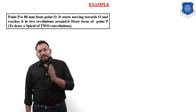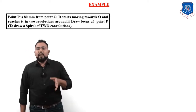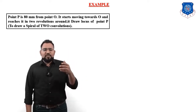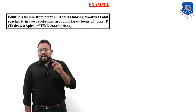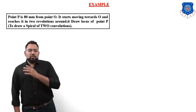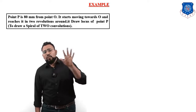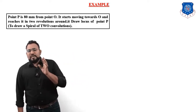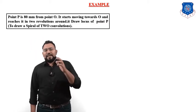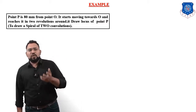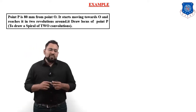Now let us start today's video. The example on your screen states: a point P is 80 mm from point O. It starts moving towards O and reaches it in two revolutions around it. Draw the locus of point P. In brackets, it mentions to draw a spiral of two convolutions. Let us first decode what the problem is saying.